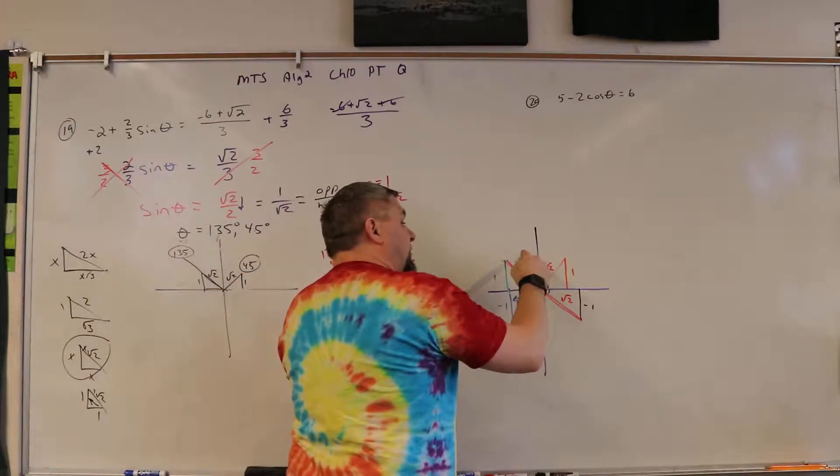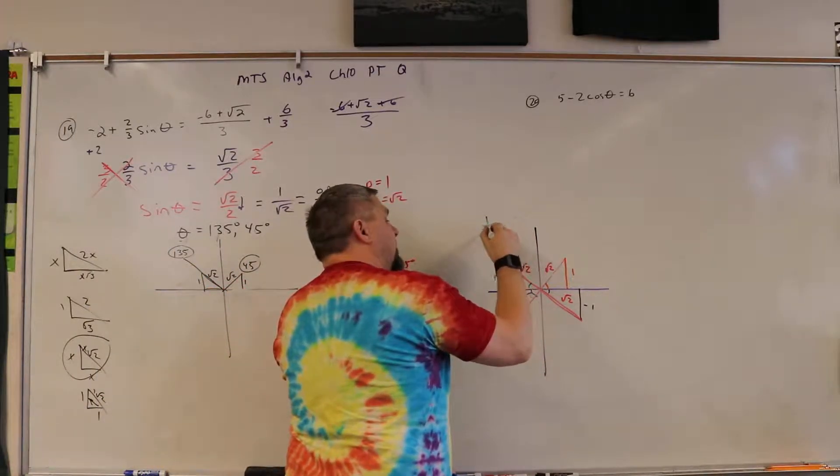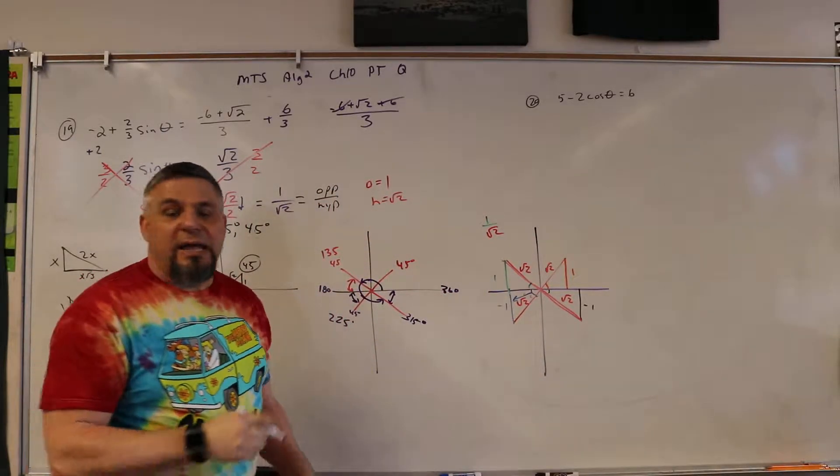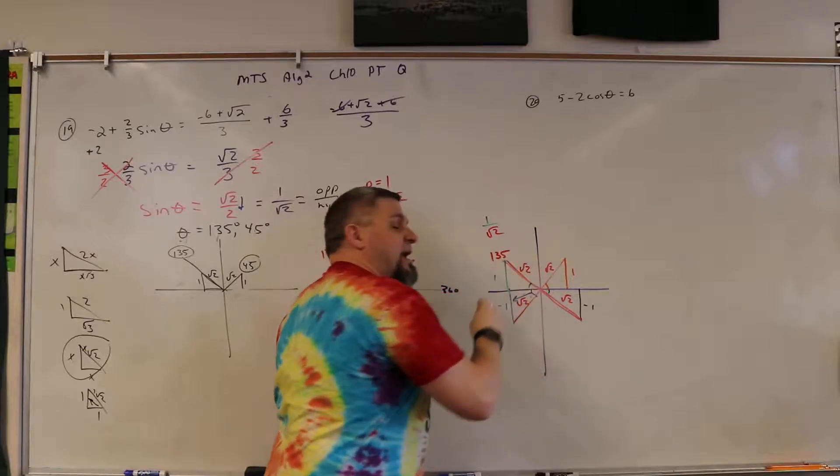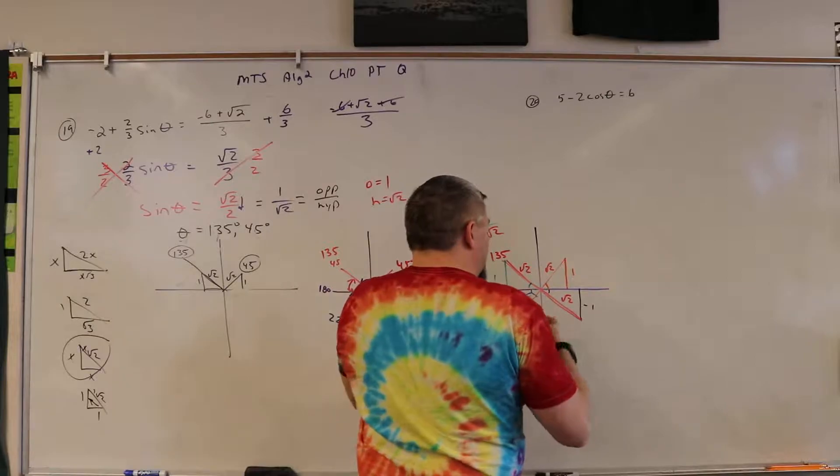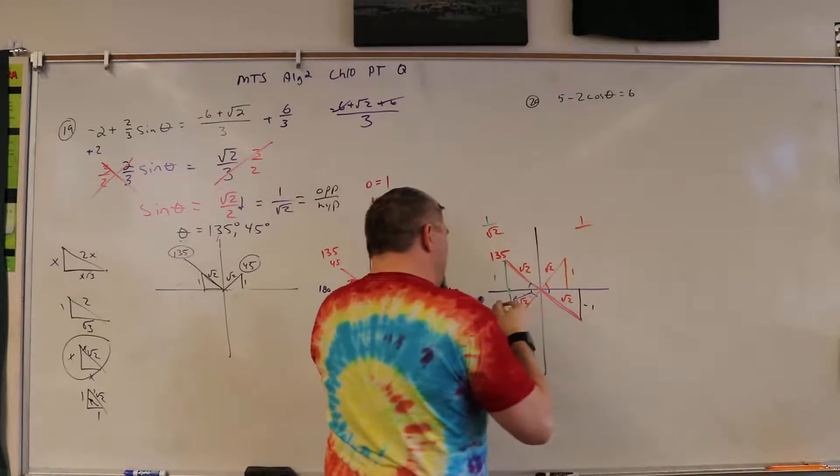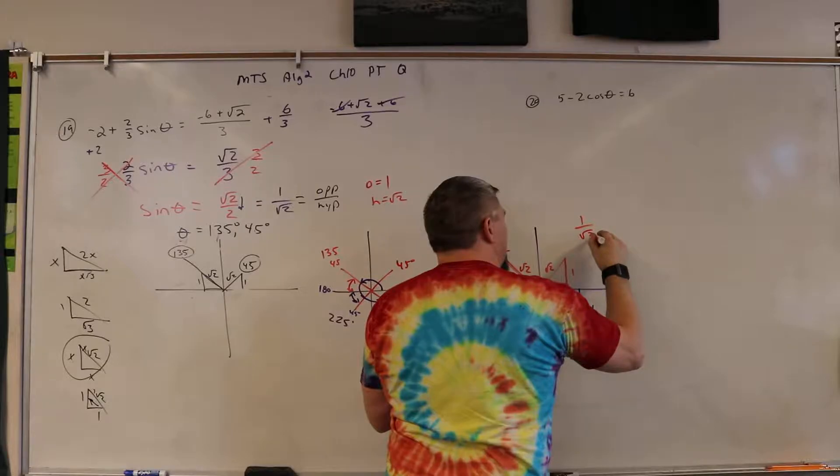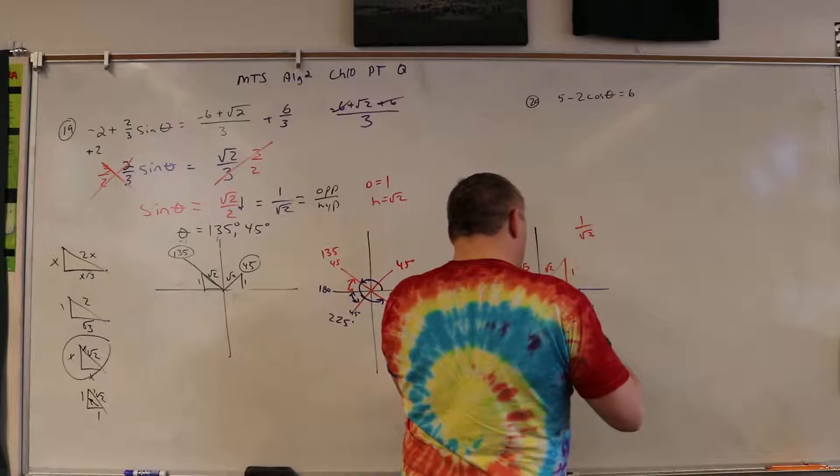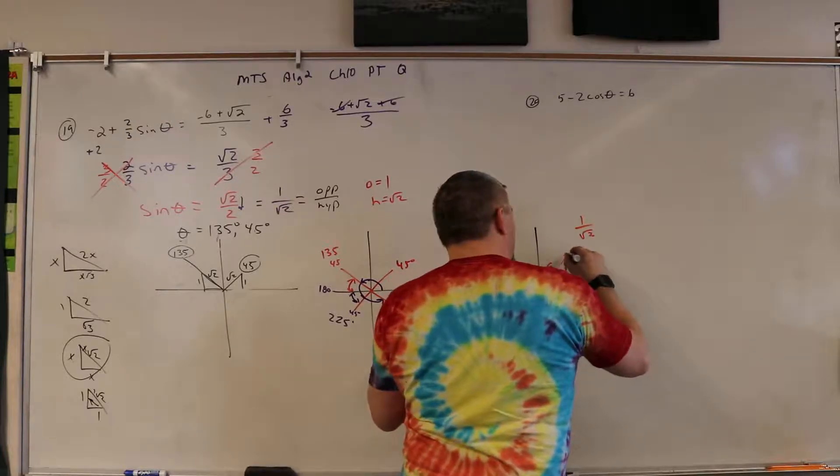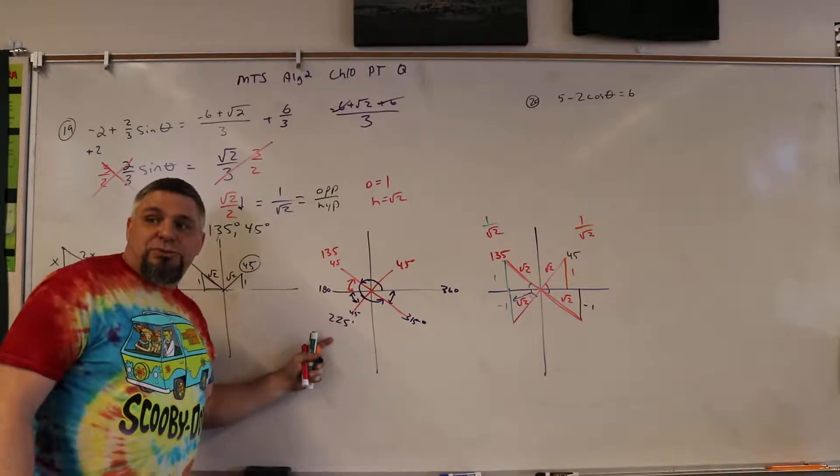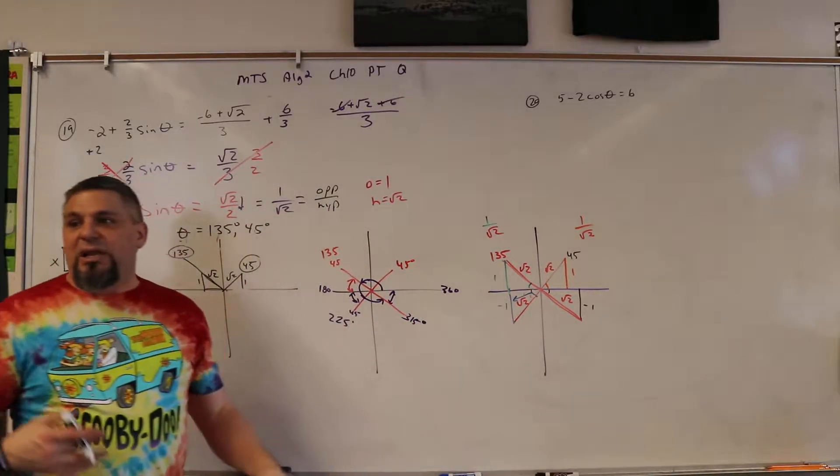So opposite over hypotenuse is one over square root two, and that's 135, right? And then opposite over hypotenuse. So 45, 135, 225, 315, right?